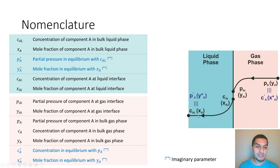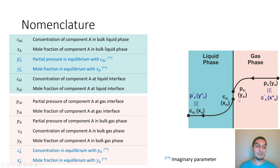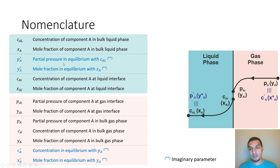Starting from the liquid bulk: C_AL is the concentration of the bulk liquid phase, and X_A is the mole fraction representing the same point. Then I have the interfacial concentration C_A-interface and X_A-interface - the molar concentration and mole fraction of species A at the interface. Moving to the gas phase: I have partial pressure at the interface, mole fraction at the interface, partial pressure at the bulk of the gas phase, and Y_A - the mole fraction at the bulk of the gas phase.